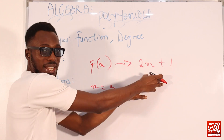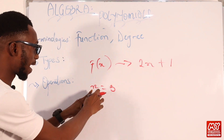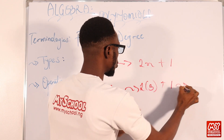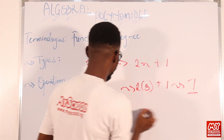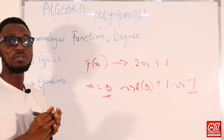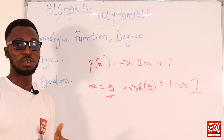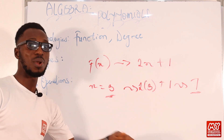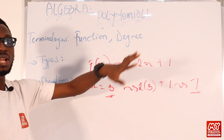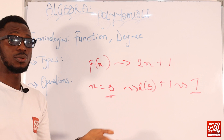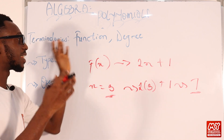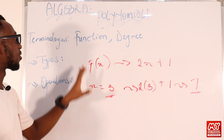The input is the object and the output is the image. The input is independent and the output is dependent. So if x equals 3, the image is 2 times 3 plus 1, which gives 6 plus 1, that is 7. That's basically what a function is. We have different types of functions: linear functions, quadratic functions, polynomial functions, logarithmic functions, exponential functions, and trigonometric functions.